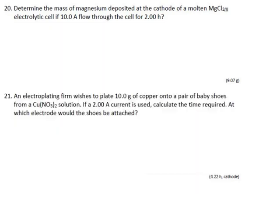Determine the mass of magnesium deposited at the cathode of a molten magnesium chloride cell if 10 amps flow through the cell for two hours. Let's use our trusty formula. What have they told us? The current is...